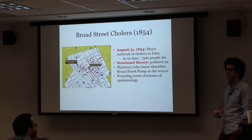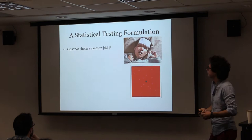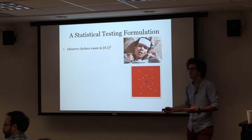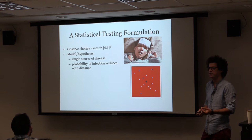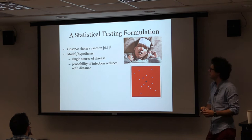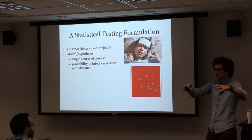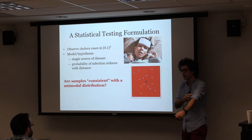If we wanted to formulate identifying the cause of the disease as a statistical learning or testing problem, one natural formulation is the following. We're observing points on the plane — these are cholera cases. Our model or hypothesis is that there is a single source of the disease, and as you move away from the source, the probability you get the disease is smaller. You want to figure out whether these samples are consistent with the hypothesis that there is a single source and the distribution of cases is unimodal around that source. So in some sense, this problem is really a problem about testing unimodality of distributions.